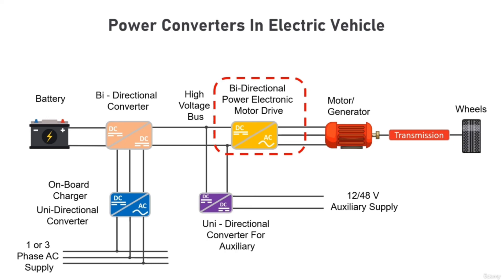The motor drive is a DC-to-AC converter used to control the operating AC motor. The motor drive is bidirectional: it feeds power to the motor for propulsion and acts as an AC-to-DC rectifier by drawing power from the motor during regenerative braking. In some cases the motor drive can be a DC-to-DC converter if the motor is a DC motor, such as a brushless DC motor.